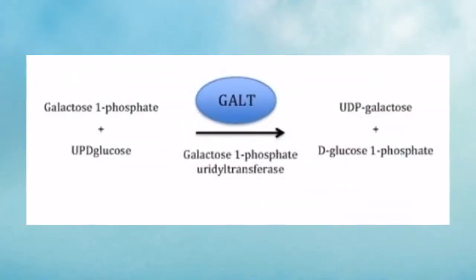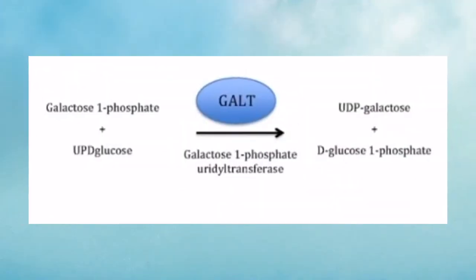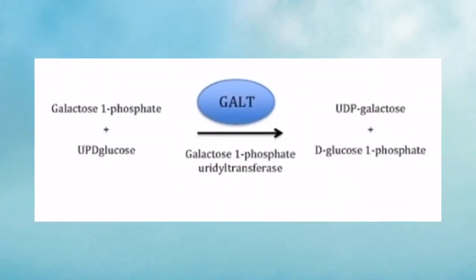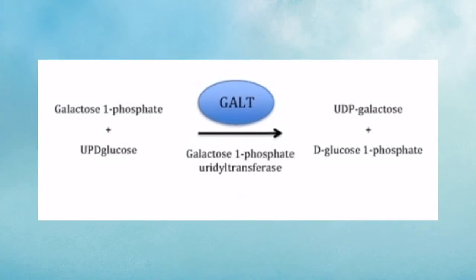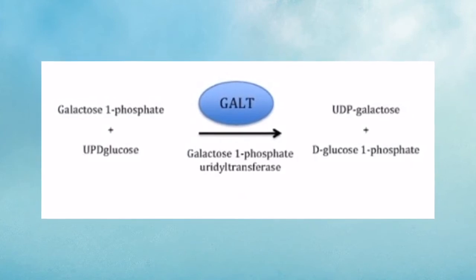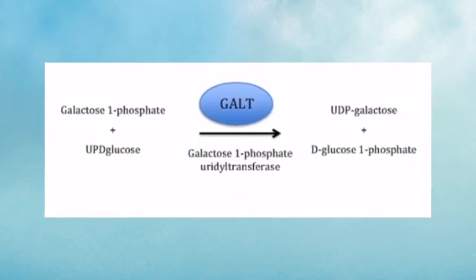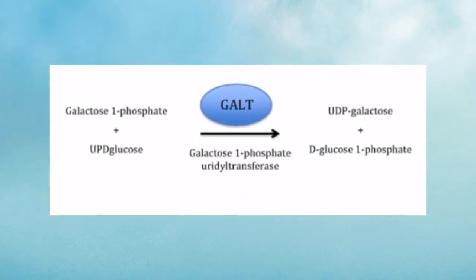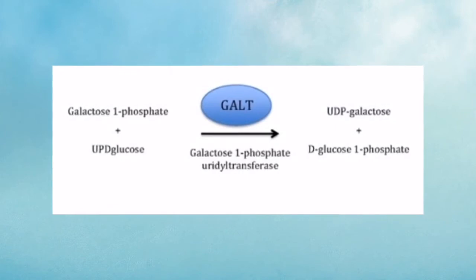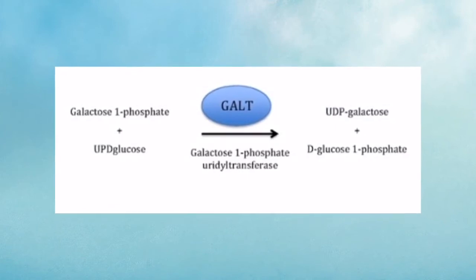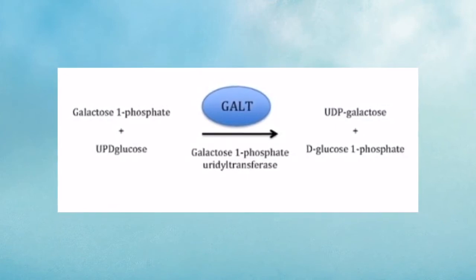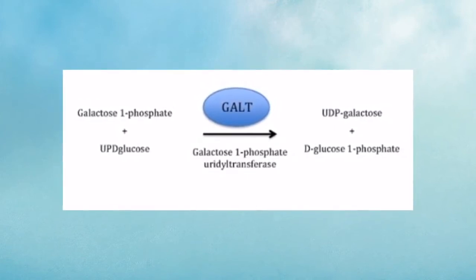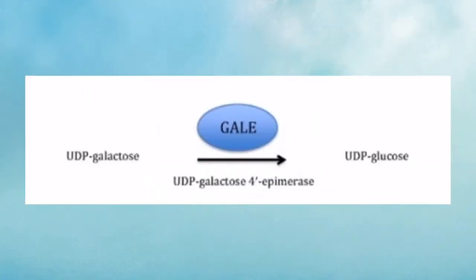Next is the uridylation of galactose-1-phosphate to UDP-galactose, catalyzed by the enzyme GALT. This involves the release of glucose-1-phosphate, which is then rapidly metabolized to glucose-6-phosphate for entry into the glycolytic pathway.